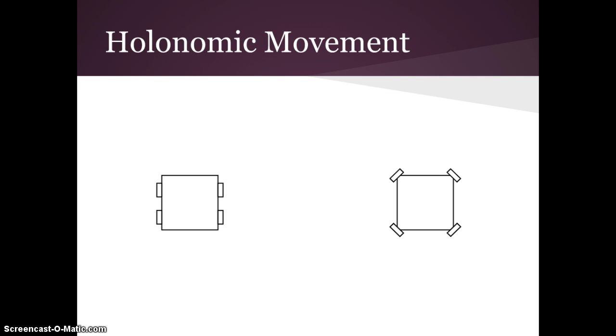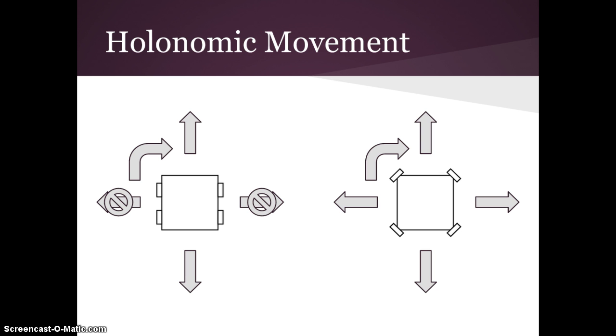One thing that omniwheels are commonly used for is holonomic movement. Holonomic movement is just movement in all directions. So if you look at the standard vehicle on the left versus the holonomic vehicle on the right, they can both move forwards and backwards and they can both rotate, but only the holonomic vehicle can move side to side. The standard vehicle can't have controlled side to side movement.